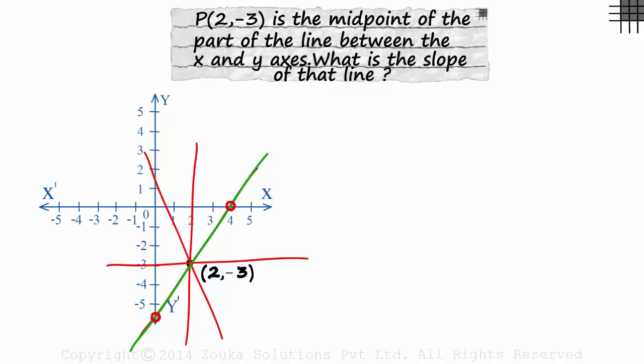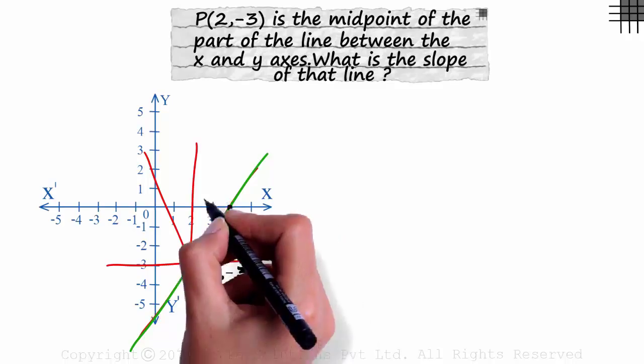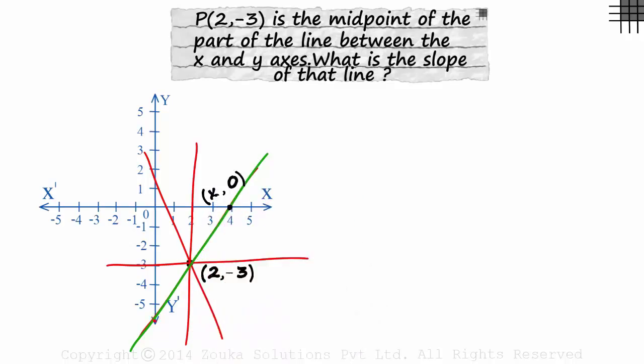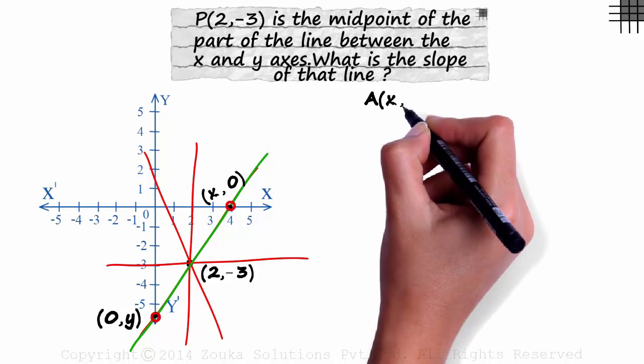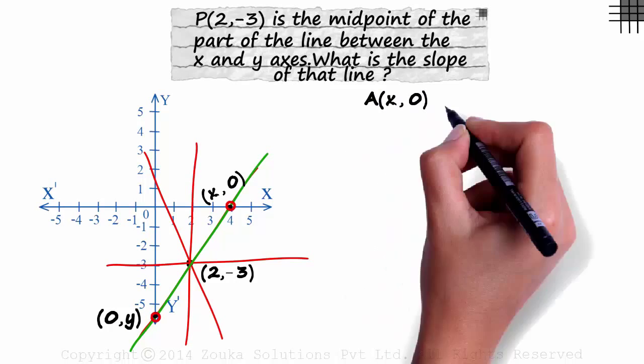Look at the endpoints first. This endpoint will have coordinates x, 0 and this endpoint will have the coordinates 0, y. The endpoints can be named A and B.